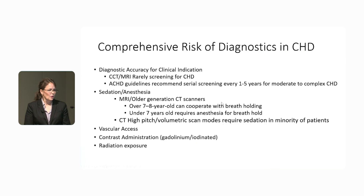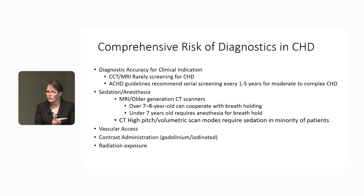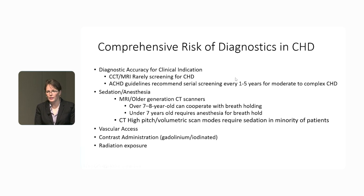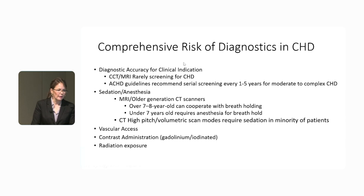When we look at comprehensive risk in congenital heart disease, the first thing is we need to have an accurate diagnosis. When you think back to those ASDs, patients were being taken to the operating room with the wrong diagnosis. CT and MRI are almost never used for screening in congenital heart disease — almost all the time these patients have complex disease and the study is done for a specific question. The current ACHD guidelines recommend serial screening every one to five years for moderate to complex disease, so you want a very targeted exam for the clinical indication.